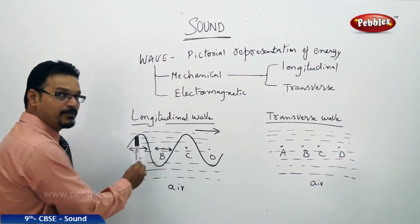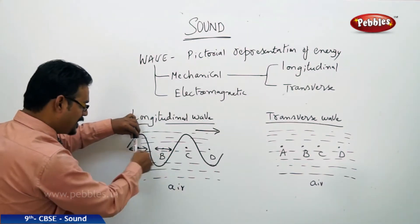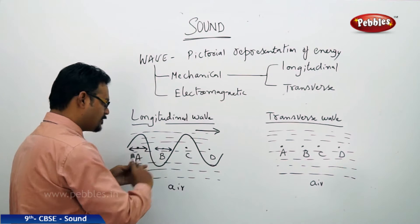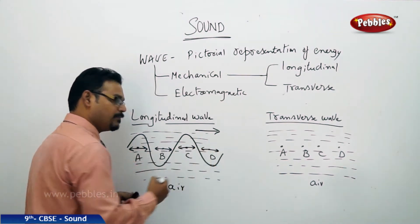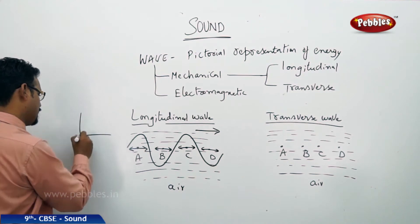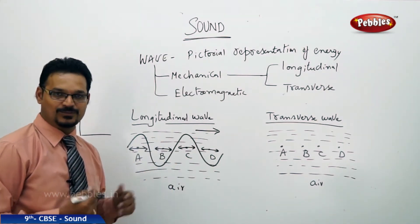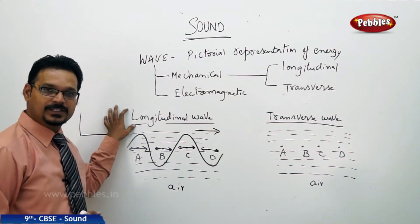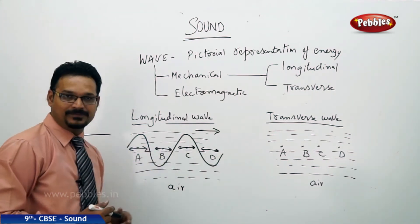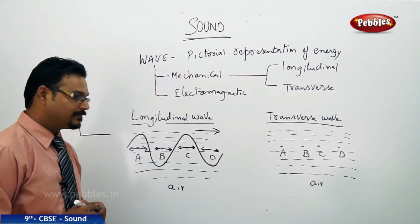Particle B also vibrates the same way — horizontally. All particles vibrate horizontally, and the wave is also going horizontally. So I can say that a longitudinal wave is a wave where the particles vibrate along the direction of the wave. When particles vibrate along the direction of wave propagation, it is called a longitudinal wave.